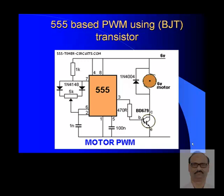Now let us see a 555-based PWM using a BJT transistor. There are quite a large number of circuits available on the internet, but many of them contain serious mistakes. This circuit was picked up from the net. It uses a 555 timer in astable mode where the capacitor and resistance are present, but there is only a charging path and no discharging path to pin number 7. This circuit is completely defective and will never work.